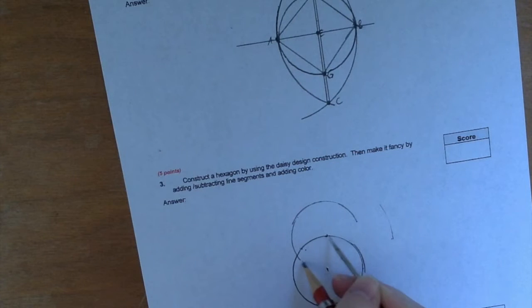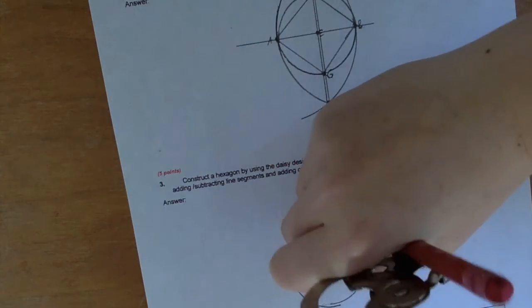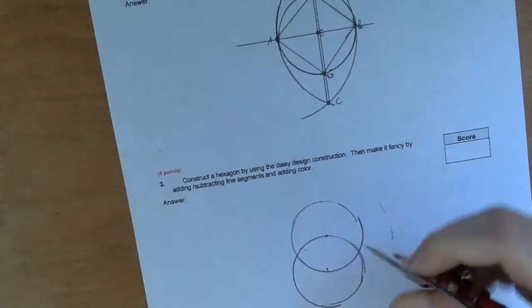And if you did it right, at one point your pencil is gonna go straight over the hole for the little other circle that you made earlier.